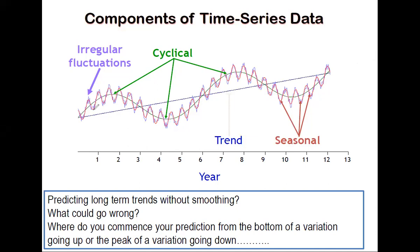Within one year period you observe a sinusoidal pattern, and in the next year you observe the same pattern again. It keeps recurring — the same pattern repeats over and over each year. That is what we refer to as seasonal variation.